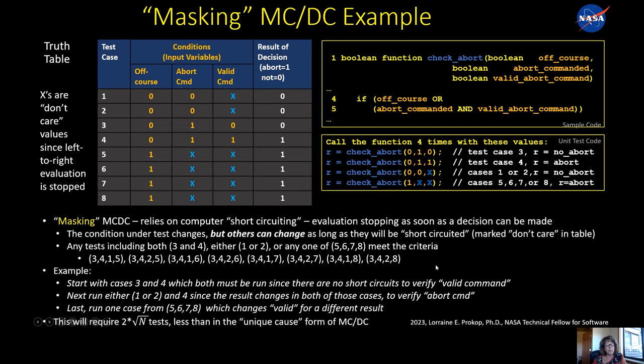So this results in two times the square root of n possible tests, which is actually less than the unique cause form of MCDC. And to be honest, this form is really the form that maps better to computers. And it actually is the form that is used if you use a tool like GCov.